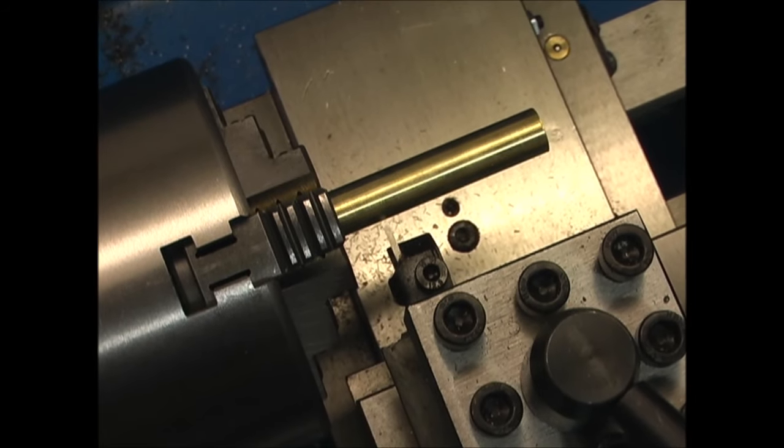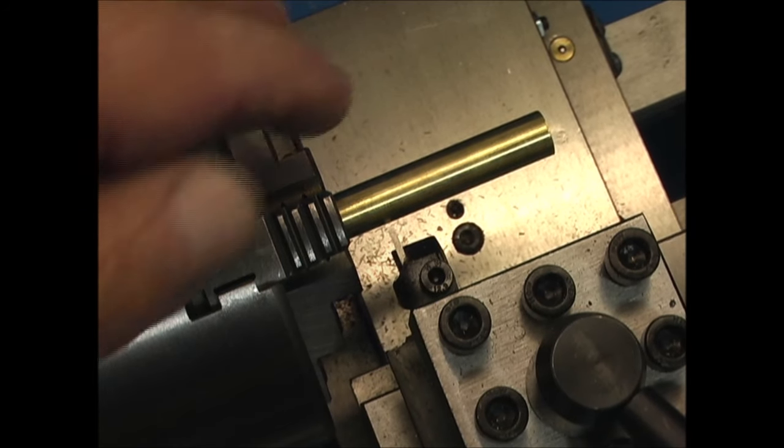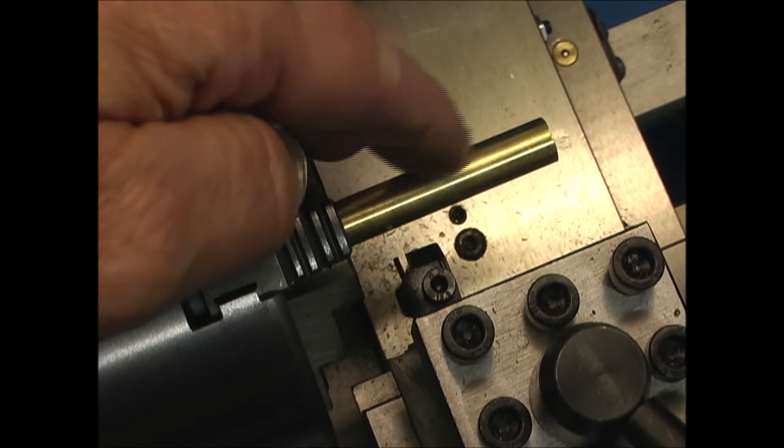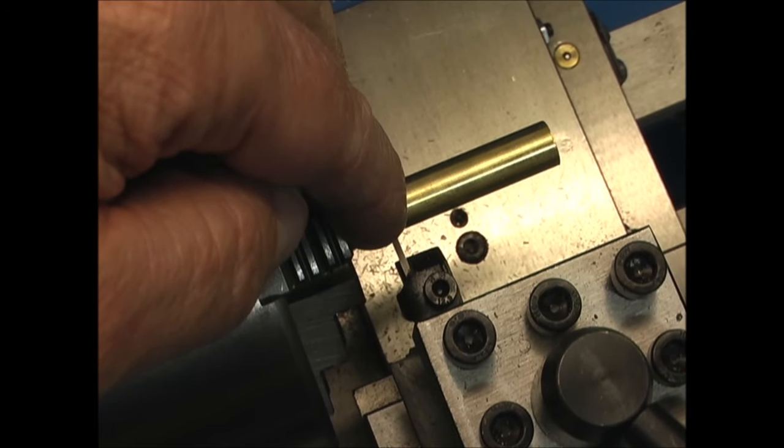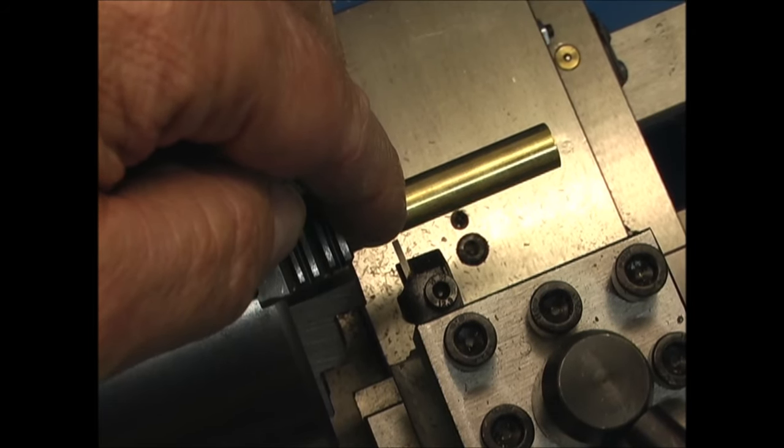Now that I've checked out the lathe and I have it all set up, I want to use it to put a couple of small grooves in this brass shaft. I'm just going to use this little parting tool because it's about the right width for the grooves.